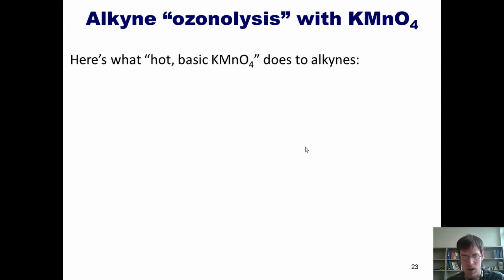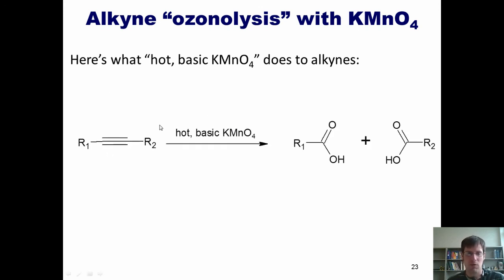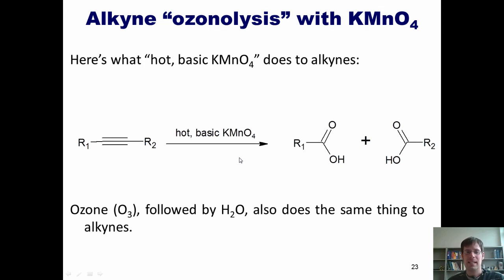Now here, just so you know, is what hot basic KMnO4 does to alkynes. If I take an alkyne and treat it with hot basic KMnO4, it does something kind of similar, it saws it in half, but remember that I've got three bonds to oxygen that I'm going to be plopping oxygens onto. So that actually ends up making two separate carboxylic acids. And just so you know, ozone followed by water does the exact same thing to alkynes as hot basic KMnO4.